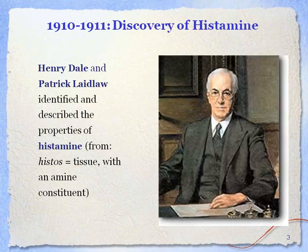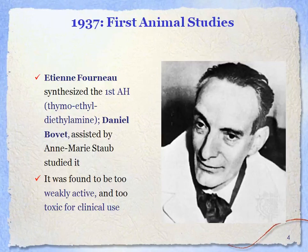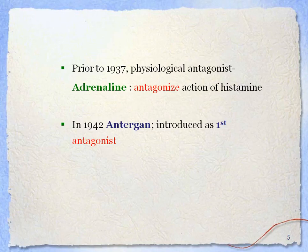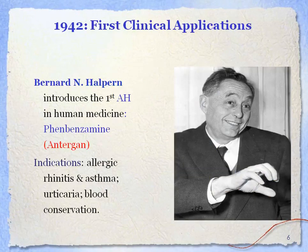In 1910 to 1911, histamine was discovered by scientists Henry Dale and Patrick Laidlaw, who identified and described its properties. In 1937, the first animal studies were undertaken by E.T.E. Fourneau, who synthesized the first antihistamine, diethylamine. Prior to 1937, adrenaline was used as a physiological antagonist — it shows opposite actions to histamine. In 1942, antigen was introduced as the first antagonist against histamine, and the first clinical application was introduced by Bernard N. Halpern, called phenbenzamine.